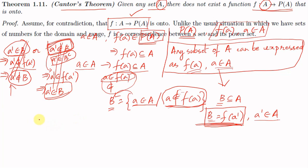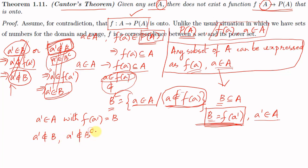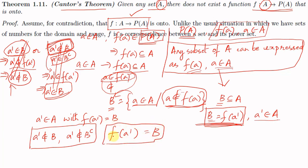In both cases we reach a contradiction. We have an element a' in A with f(a') equal to B, but a' can neither be an element of B nor an element of the complement of B. This means no such a' can exist for which f(a') equals B, so the function f from A to P(A) is not onto. This completes the proof of Cantor's Theorem.